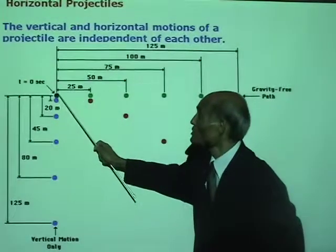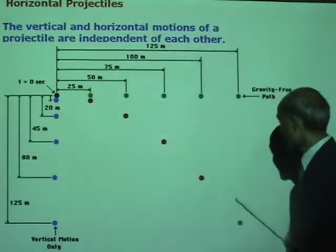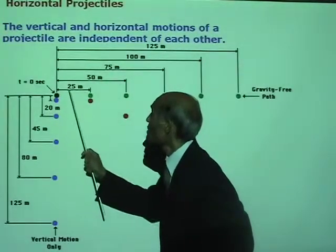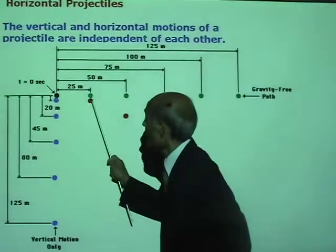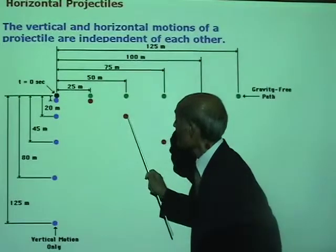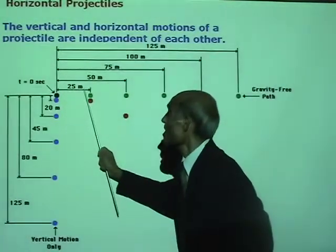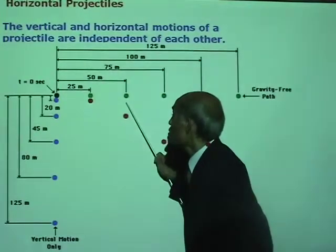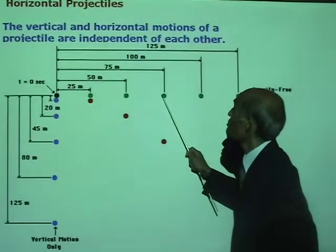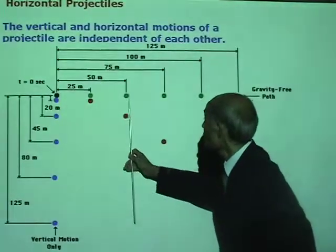The vertical and horizontal motions of a projectile are independent of each other. The vertical motion will not affect the horizontal motion and the horizontal motion will not affect the vertical motion. At the end of the first second, the ball has travelled 25 metres horizontally and a small distance vertically. At the end of the second second, the horizontal distance is 50 metres — the horizontal motion is uniform: 25, 50, 75, 100, 125.